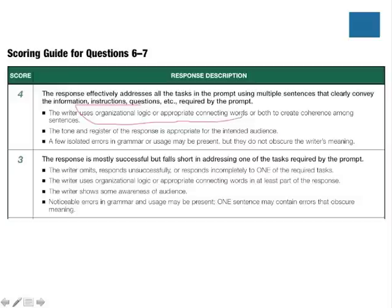We'll also be thinking about appropriate connecting words and how ideas need to fit together. Another key idea is thinking about the register of the response and that it's appropriate for the intended audience. You will notice that grammar will not play as much of a part as it does in the first task, where grammatical accuracy was essential. In this task, it's going to be more about how to express ourselves and especially conveying the information called for in the prompt.